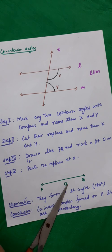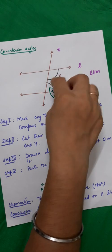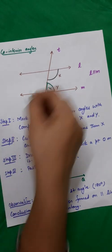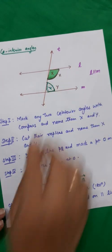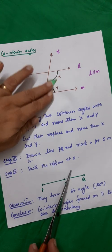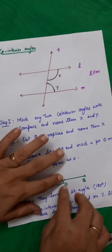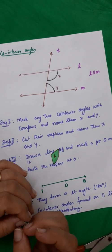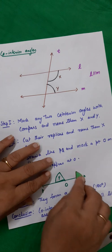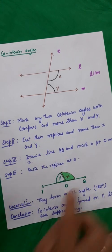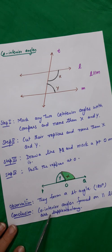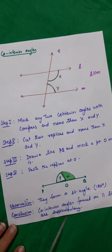Same procedure: cut the replicas of X and Y. Next step is to draw a line PQ and mark a point O on it. Paste these replicas at point O. I paste them like this and observe the result. What I observe is that they form a 180 degree angle — a straight angle. Hence I can say that co-interior angles formed on parallel lines are supplementary.